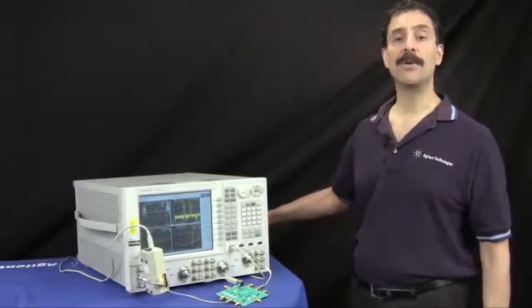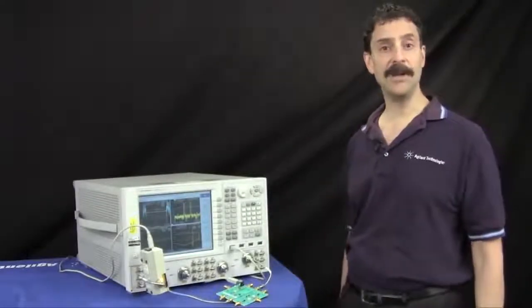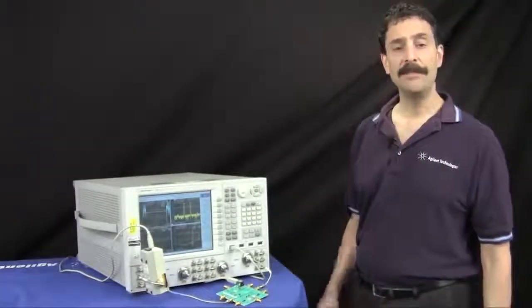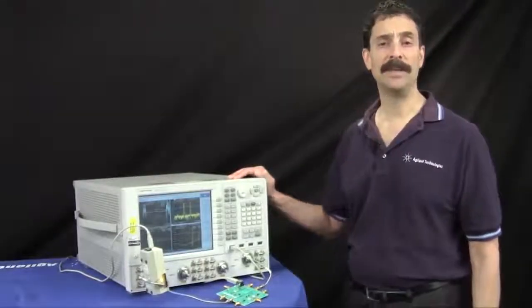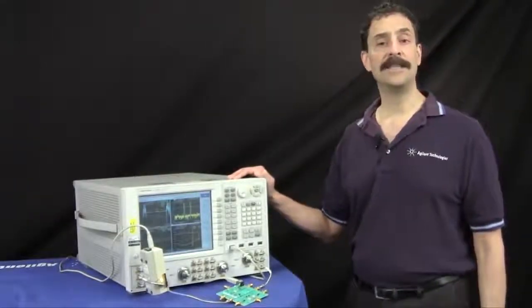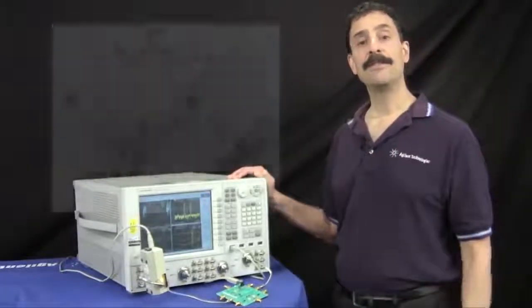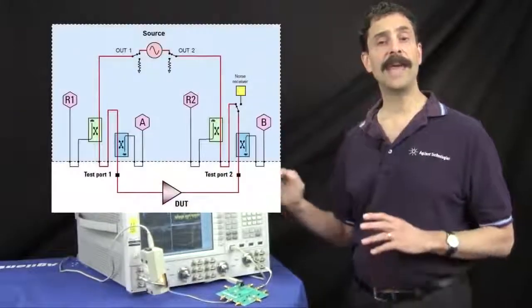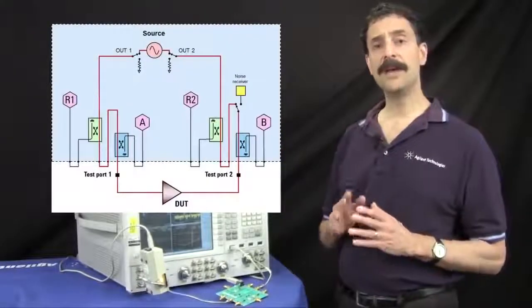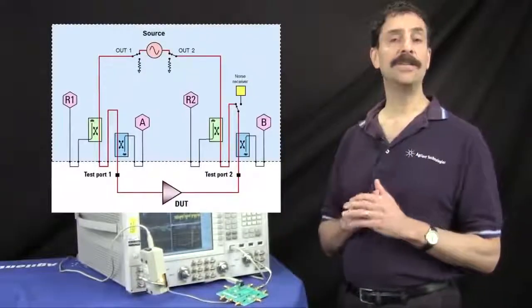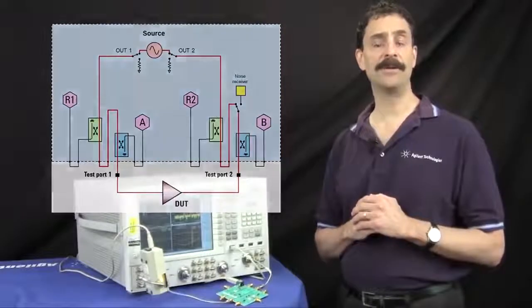Let's examine in more detail how the PNA-X measures noise figure. The PNA-X uses a cold source method, where noise figure of the DUT is calculated from two separate measurements. The first measurement is the available gain of the DUT, and this is done with great precision using vector error-corrected S-parameter measurements.